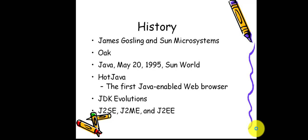Coming to the history of Java — it was developed by James Gosling and maintained by Sun Microsystems. The very first version of Java was named Oak. This was later renamed to Java because the name Oak was already registered by some other members when they went for registration. So they changed the name to Java, and it was developed in May 1995. I'm going to talk about HotJava, JDK evolutions, and J2SE in further slides.